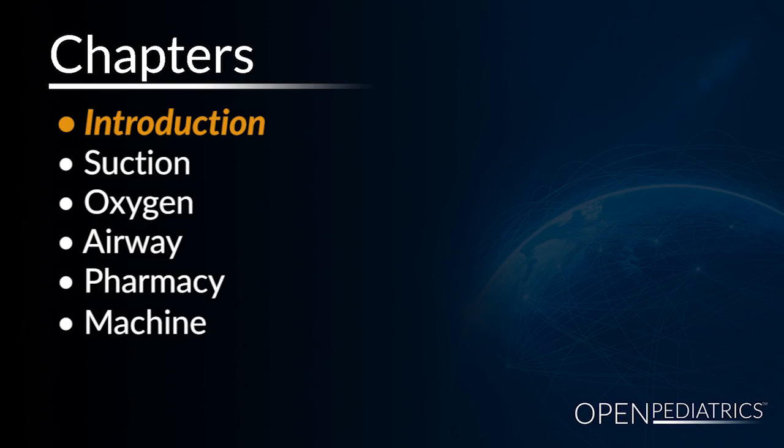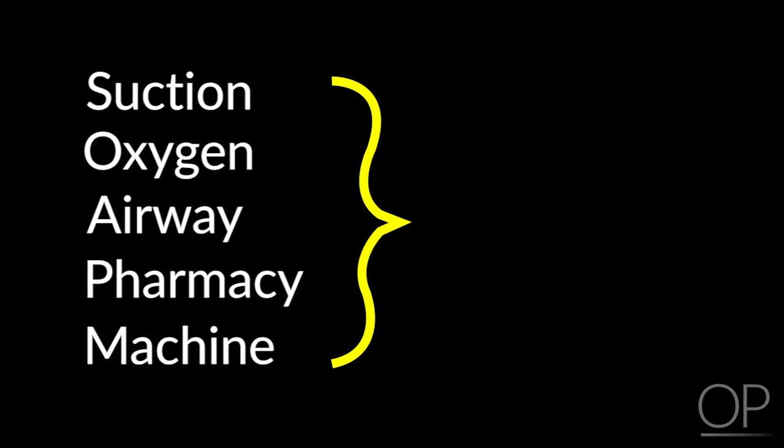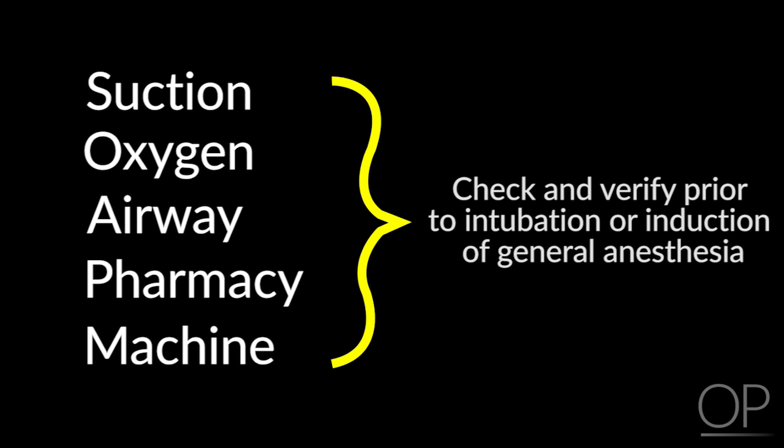Today, we'll be using the mnemonic SOAP-M: S for suction, O for oxygen, A for airway, P for pharmacy, and M for machine. These are all essential components to your anesthesia workstation setup and should be checked and verified immediately prior to intubation or induction of general anesthesia.